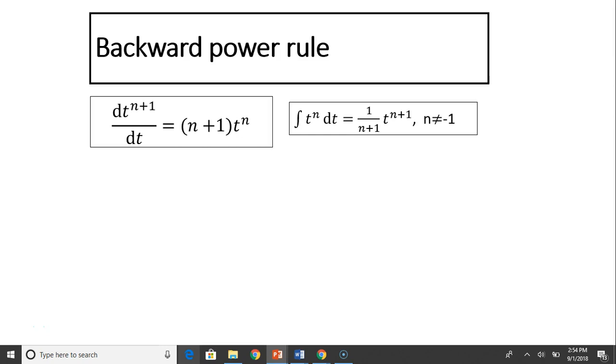The first rule and the most used rule is backward power rule. We know from derivatives d/dt of t^(n+1), that derivative is (n+1) times t^n. Now the backward power rule is: what is the original function whose derivative is t^n? The general form is 1/(n+1) times t^(n+1). As you can see in this equation, n cannot be negative 1 because if n is negative 1, the first term will be 1/0. That is invalid expression.